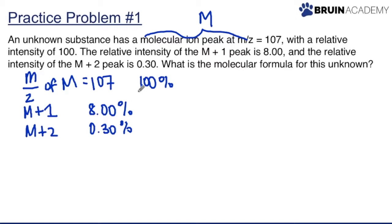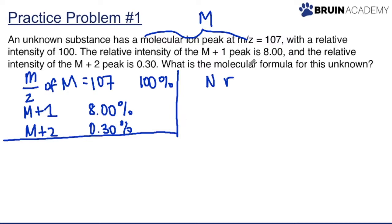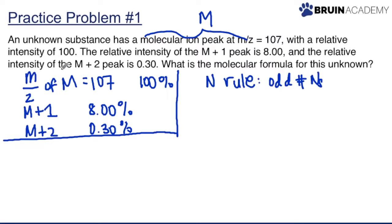If you remember from the nitrogen rule, an odd number for m/z means that we have an odd number of nitrogens in our unknown substance's molecular formula. So m/z = 107 being odd tells us we have an odd number of nitrogens.